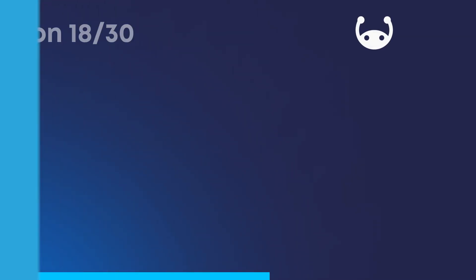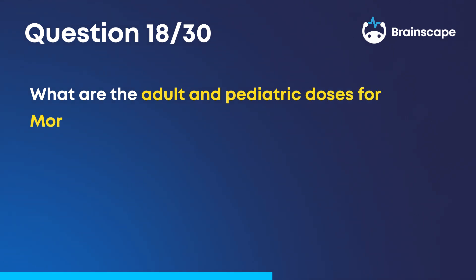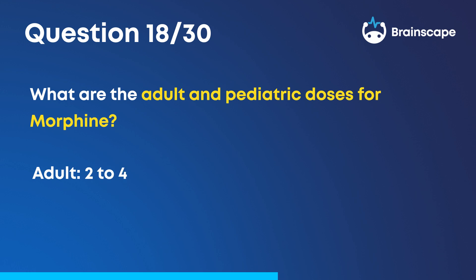Question 18. What are the adult and pediatric doses for morphine? For adults, it's 2 to 4 milligrams. For pediatric patients, it's 0.1 to 0.2 milligrams per kilogram.